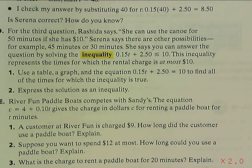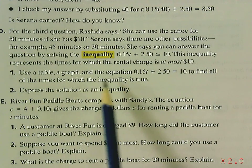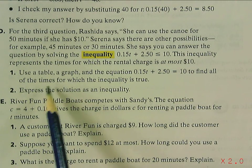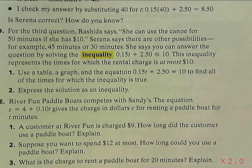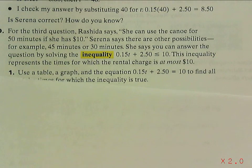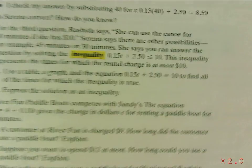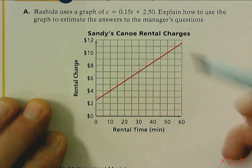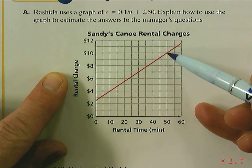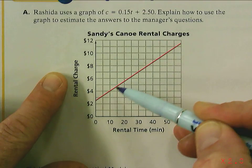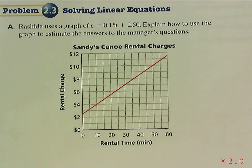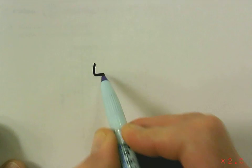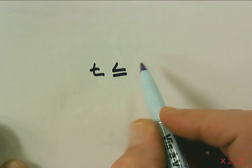It's at most 50 minutes, but it can be anything less than that. Looking at the table, the graph, or the equation — all of these different ways we can find the time. If you look at the graph for $10, all of these are possibilities. Everything on this line is less than $10, so all these different times from 50 minutes and below are true.